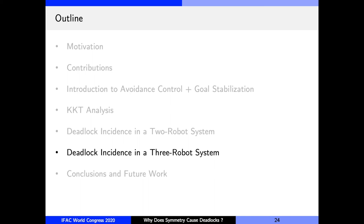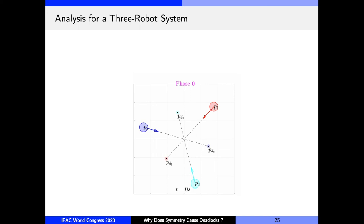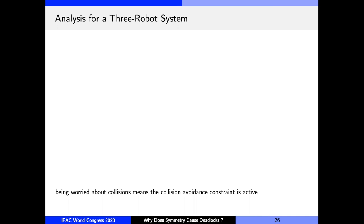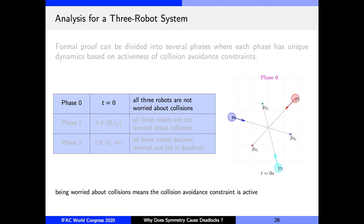So the main result is as follows. Given symmetric initial conditions and goals, as shown in this picture, the controls resulting from CBF QP result in deadlocks, as this animation shows. So unlike the two robot case, here we assume that all robots have identical proportional gains. And this video demonstrates how deadlock occurs. So let's see the proof. The proof can be divided into several sequential phases. When robots start at t equals zero, they're far away from one another. So all of them are not worried about collisions at this time. This constitutes phase zero. And for a finite duration until t_1, they all continue to be not worried about collisions. This constitutes phase one. And subsequently, all robots simultaneously begin to worry and eventually fall in deadlock. This constitutes phase two.